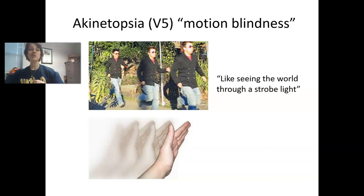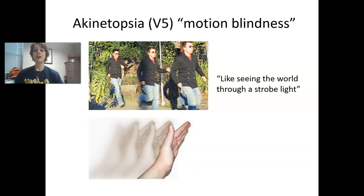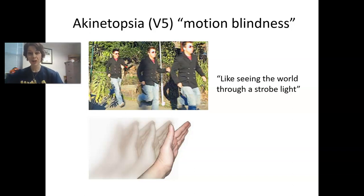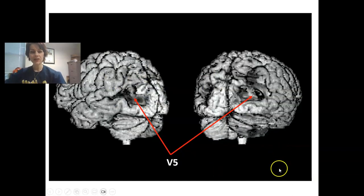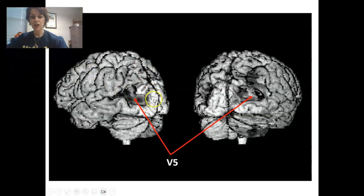Instead of seeing a hand move smoothly across the screen, they're going to see it here, and then suddenly it'll be here, and then suddenly here. These patients lack the ability to see smooth motion, so they may have difficulty with things like pouring tea or coffee — they'll look away and their cup will be overflowing. They're obviously going to have some difficulty with things like driving as well. Here is area V5 in the occipital lobe, beginning a more dorsal track in the brain.